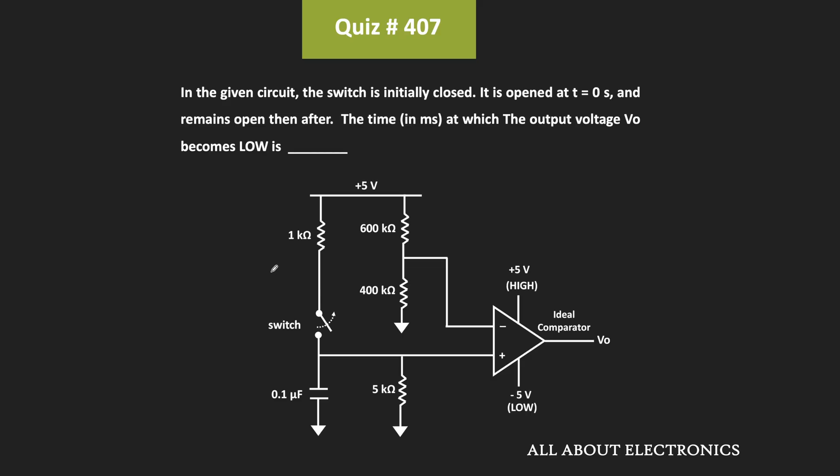Hey friends, welcome to the YouTube channel All About Electronics. In this question, we have been given a comparator based circuit and we have been asked to find the time at which the output of this comparator will become low. To solve this question, you should have knowledge of transient analysis as well as the comparator.